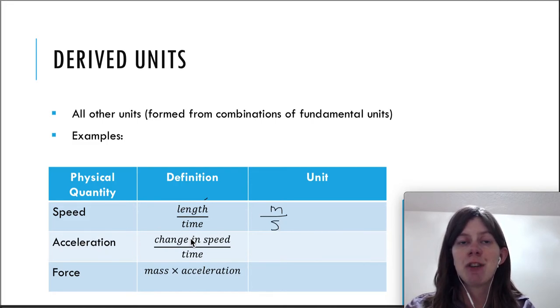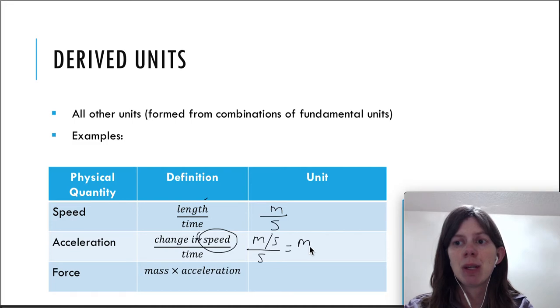Acceleration has a definition of changing speed per time. We're just trying to figure out the units here. Speed is the main quantity which has units of meters per second, and then we're going to divide that by seconds. If you're dividing something, you can multiply by the reciprocal instead. So meters per second divided by seconds is the same as meters per second times one over seconds. If you multiply the top across you get meters, multiply the seconds on the bottom, you get meters squared.